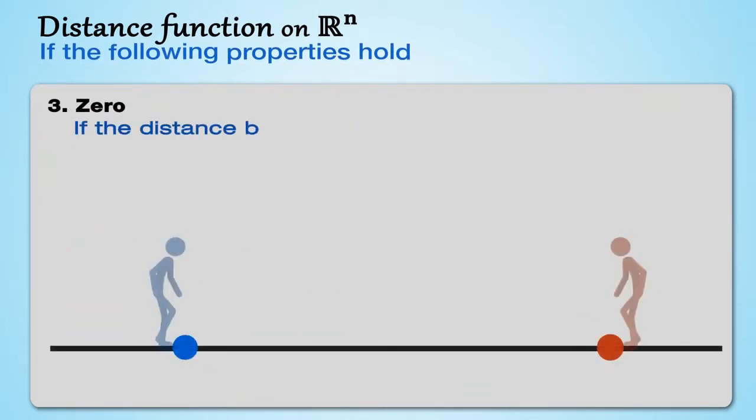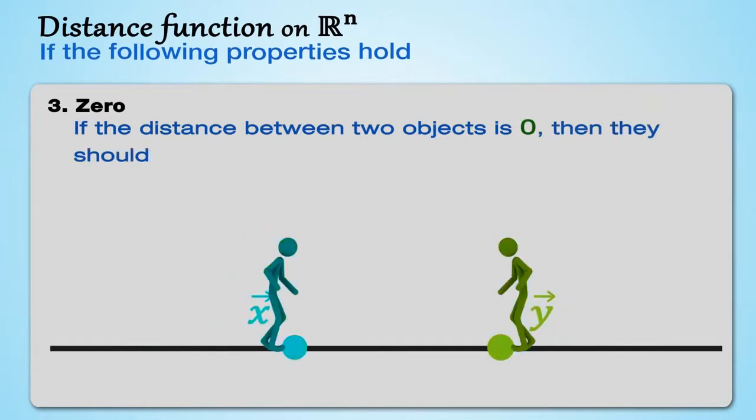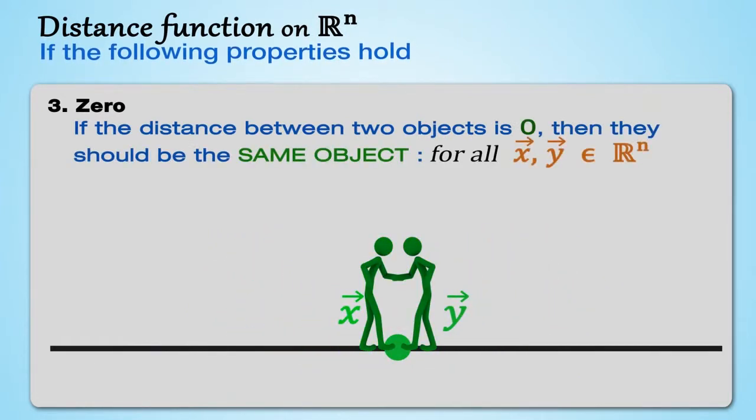If the distance between two objects is zero, then they should be the same object. For all x, y in ℝⁿ, if d(x,y) equals zero, then x equals y.